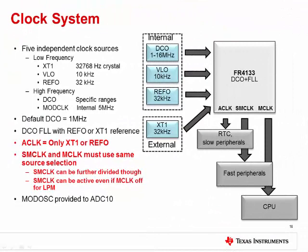These modes are enabled by a clock system on the FR4X and FR2X devices. The clock system has a couple of differences compared to some other MSP430 clock system modules. There are a few low frequency clock sources like the external crystal or VLO, and there are also a couple of different high frequency sources — the DCO or digitally controlled oscillator, and the mod clock. The DCO has a frequency locked loop, or FLL, that can use the REFO or XT1 as the reference.